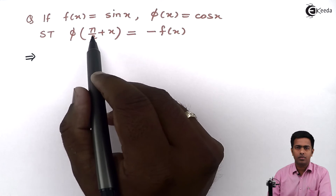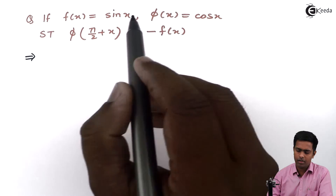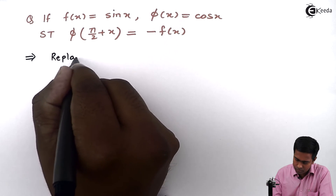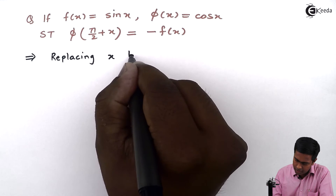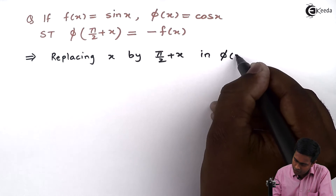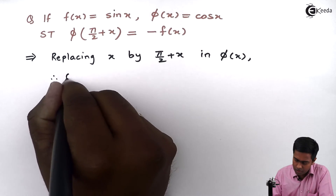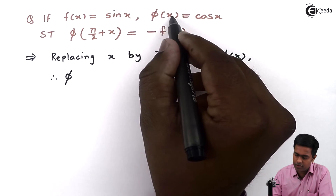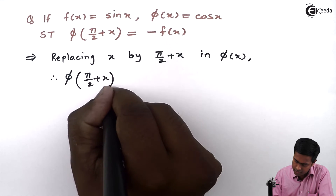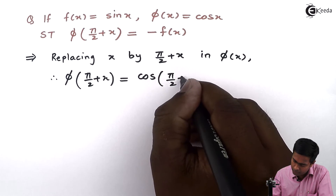To find this value, I will replace x in phi of x by pi by 2 plus x. So, replacing x by pi by 2 plus x in phi of x — I am using this second function phi of x — that bracket will become pi by 2 plus x, and on the right hand side we will get cos of pi by 2 plus x.